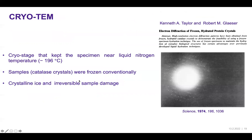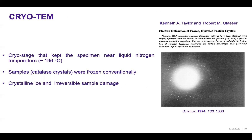The first cryo-TEM attempt was made by Taylor and Glaeser, who used catalase as their sample and froze it conventionally, then loaded it onto a cryo stage maintained at liquid nitrogen temperature. Even though they were able to provide a nice electron diffraction, the entire sample resulted in crystalline ice and irreversible sample damage.